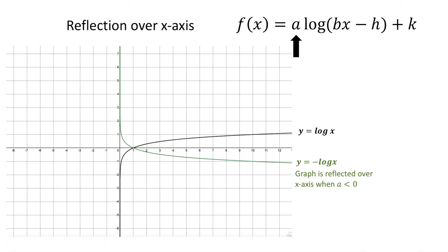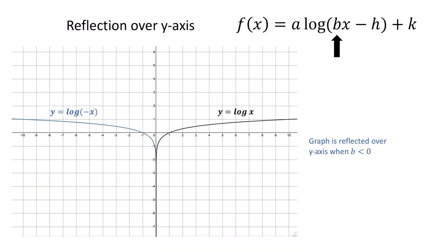We also have reflections. If the value of a — the number in front — is less than zero, the graph is going to be reflected over the x-axis, because that's a vertical reflection. If the value of b, which is inside the log, is less than zero, the graph is going to be reflected over the y-axis, because that's a horizontal reflection.